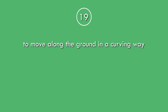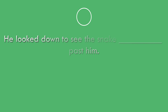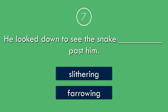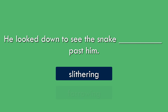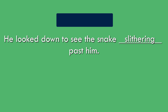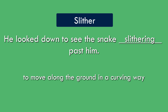Question 19. To move along the ground in a curving way. To move along the ground in a curving way. Slither: to move along the ground in a curving way.